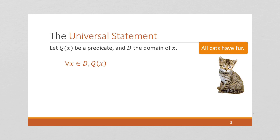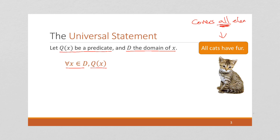Let's look at the universal statement. If Q(x) is a predicate, which we learned about in the last video, and D is the domain of X, the universal statement is: for all elements X in the domain, Q(x) is true. An example of this is 'all cats have fur' — it's a universal statement that covers all elements in the domain. In this example, the domain is cats.